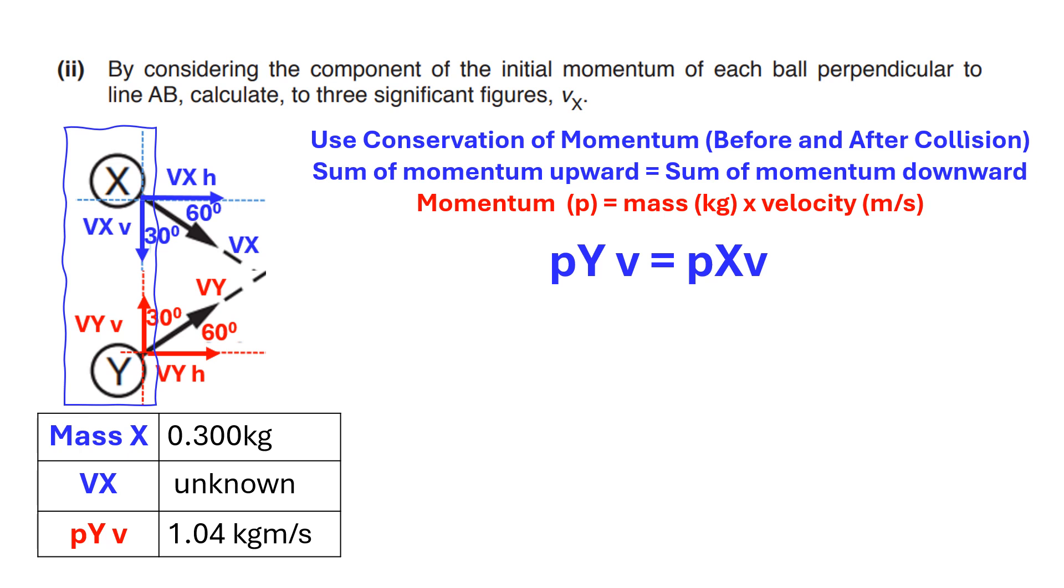The next question is asking to calculate the velocity of ball X. For this, we can use the value of the ball Y momentum in the vertical direction from the prior question to calculate this value. And in this diagram, you can see here that we are going to consider just the vertical orientation. So, we have here the velocity of the ball X downward and the velocity of Y upward. So, we are using conservation of momentum. So, the sum of the momentum upward, which is this one, is equal to the sum of momentum downward, which is PXV.